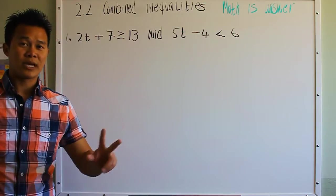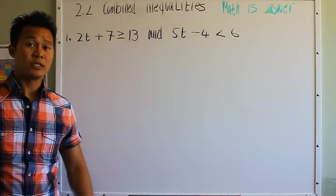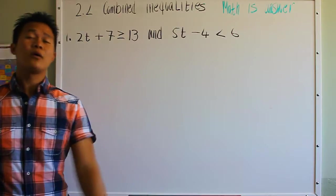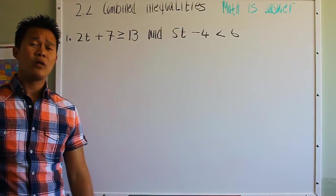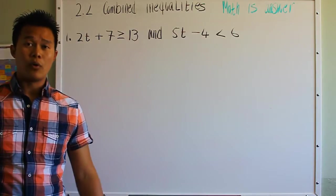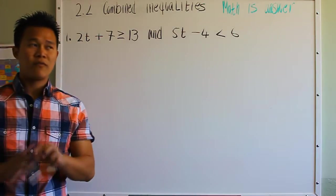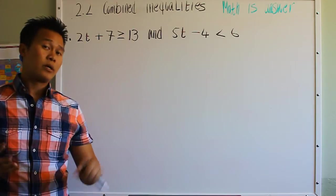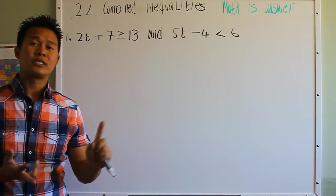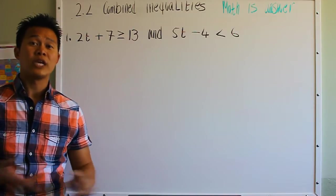Welcome to the second episode of Algebra 2 content. Today, we're going to talk about solving combined inequalities, which means inequalities containing the word 'and' or the word 'or'. We're going to solve the inequality, graph its solutions, and then state the solutions using interval notation.